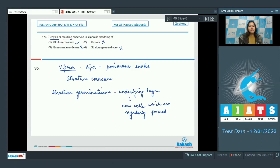As the stratum corneum is the outermost layer of epidermis and is the horny layer which sheds off, the stratum corneum has to be replaced regularly which is done by stratum germinativum. So the correct answer here becomes option number 1. Proceeding to the next question.